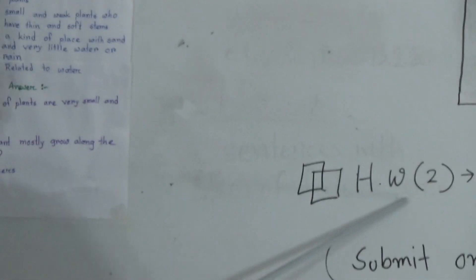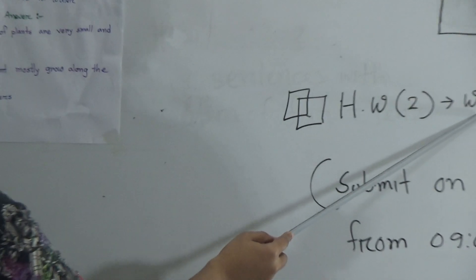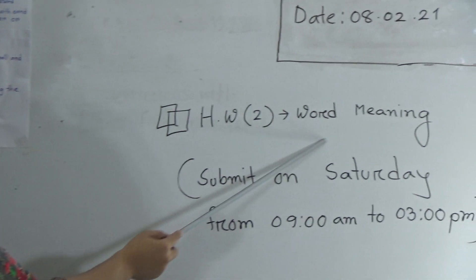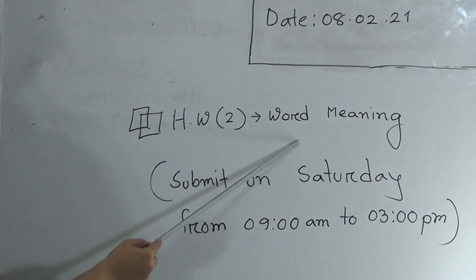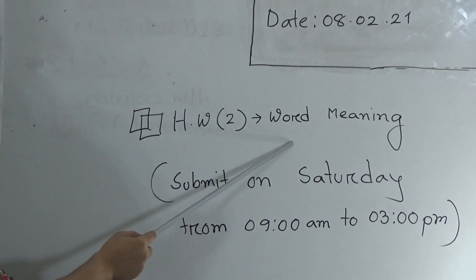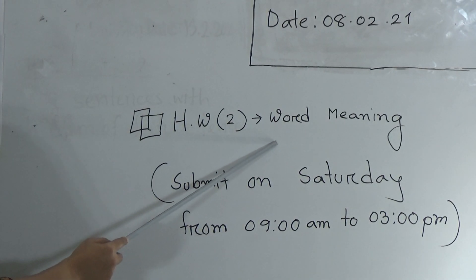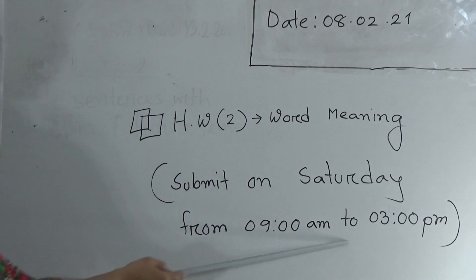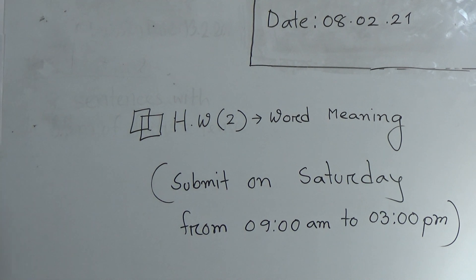Here is your homework number two. You have to do the word meanings as homework — word meanings one to four, that means shrub, herb, desert, and aquatic. You have to submit on Saturday from 9 AM to 3 PM.